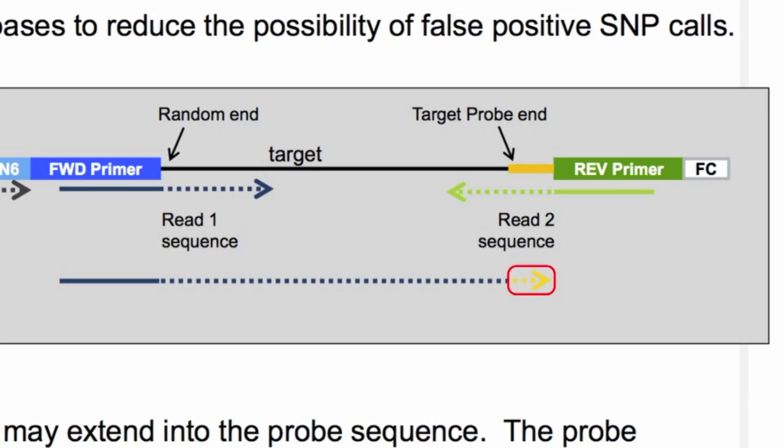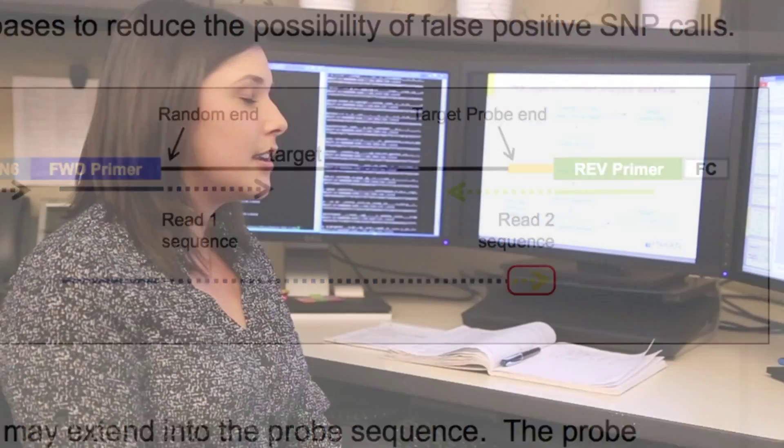Next, we use BBDUCK to remove the probe sequence from the end of the forward read. This will ensure that we do not falsely call SNPs where the probe sequence lies.